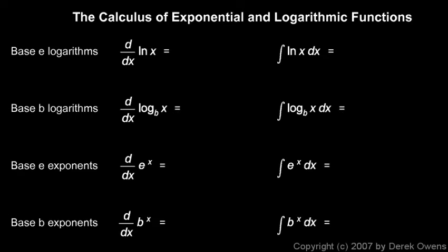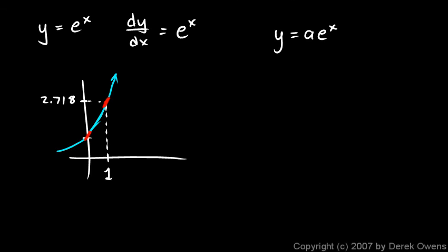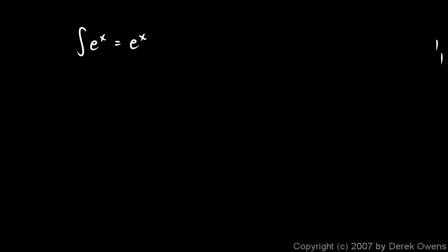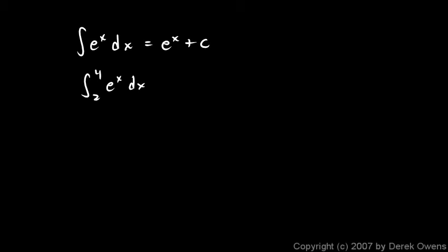Let's come back to our chart and fill this in. This is our starting point: the derivative of e^x is e^x, and we'll see that everything else follows from that. If the derivative of e^x is e^x, then it follows that the integral of e^x is equal to e^x plus C — we need to include our constant of integration. For example, the integral from 2 to 4 of e^x dx is simply e^x evaluated from 2 to 4, which is e^4 minus e^2. That comes out to about 47.209. So we can deal with both indefinite and definite integrals of the exponential function.